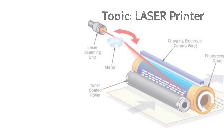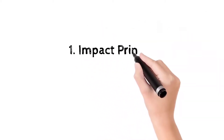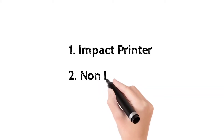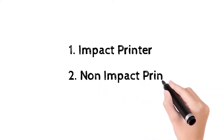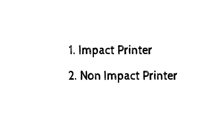Dear students, we have studied different types of printers and we know that a printer has two types. One is impact printer and the other is non-impact printer. Impact printer is a type of printer in which hammer-like force is used to print characters, graphics, and images on paper. Non-impact printer is a type of printer in which no hammer-like force is used to print characters, graphics, and images.